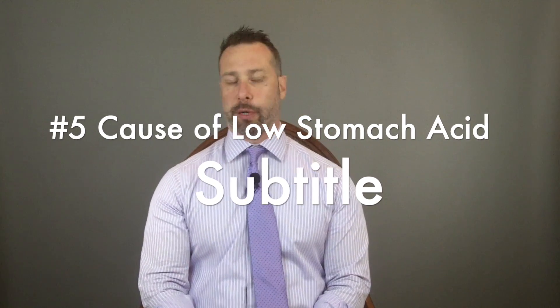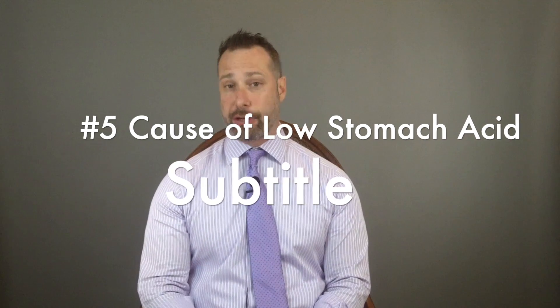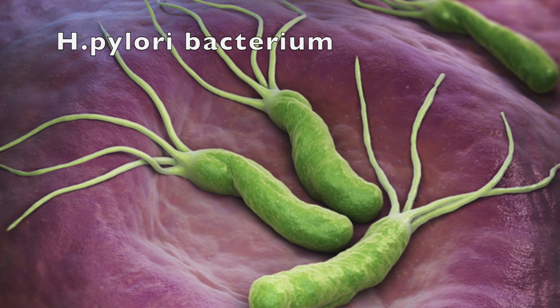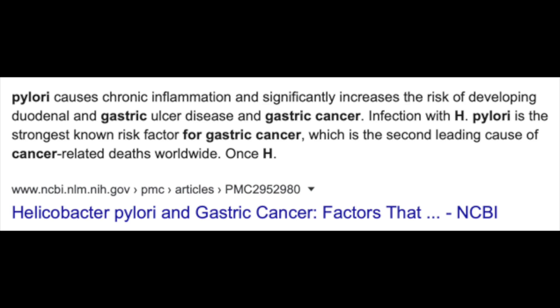Number five is an infection known as H. pylori, a common cause of gastric ulcers. Left untreated, it results in decreased stomach acid. H. pylori is associated with stomach cancer because it is notorious for shutting down the proton pumps in the stomach that are responsible for the production of hydrochloric acid.